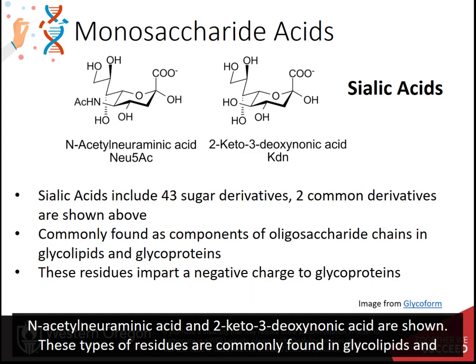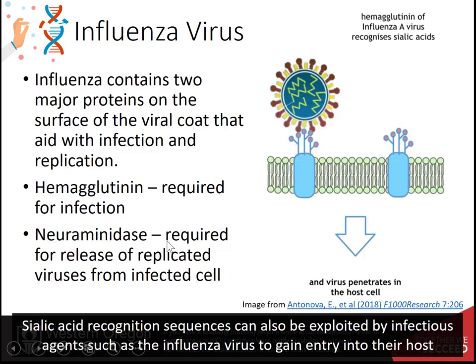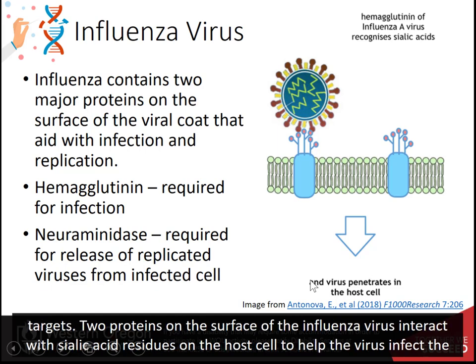These types of residues are commonly found in glycolipids and glycoproteins, where they impart a negative charge to those molecules. Sialic acid recognition sequences can also be exploited by infectious agents, such as the influenza virus, to gain entry into their host targets.